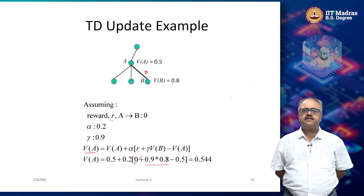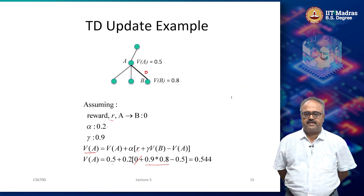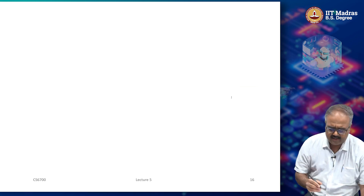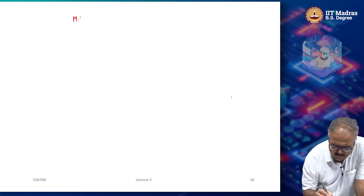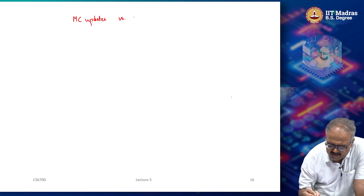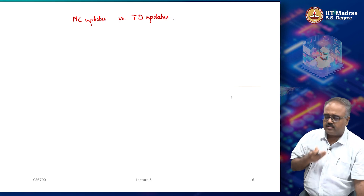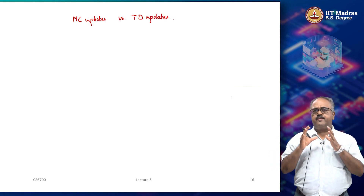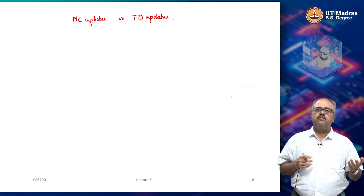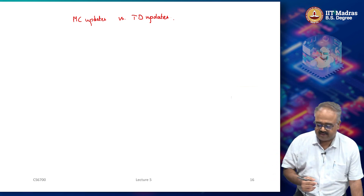In the last lecture, we saw an example of how you can compute the value function using TD updates. Today, I want to look at MC updates versus TD updates. How does Monte Carlo work and how does TD work, assuming that you are given the same set of trajectories? We want to see what value function is learnt by Monte Carlo and what is learnt by TD. Are they the same or are they different?